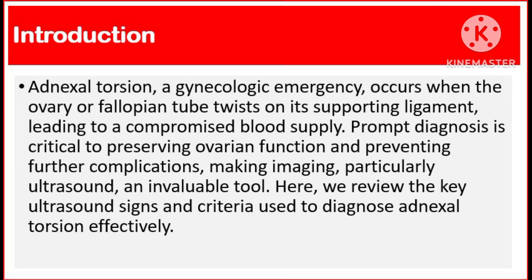Introduction. Adnexal torsion, a gynecologic emergency, occurs when the ovary or fallopian tube twists on its supporting ligament, leading to a compromised blood supply. Prompt diagnosis is critical to preserving ovarian function and preventing further complications, making imaging — particularly ultrasound — an invaluable tool. Here we review the key ultrasound signs and criteria used to diagnose adnexal torsion effectively.